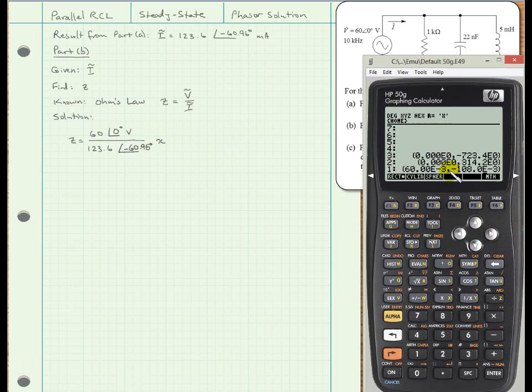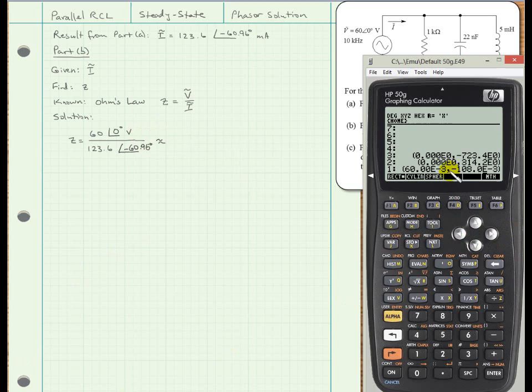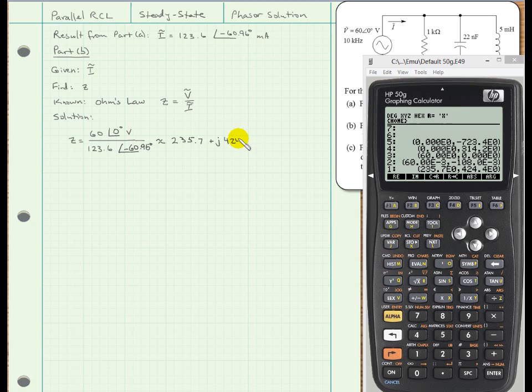Let's see, I need that in polar form, so I get 235.7 plus j424.4 in ohms.